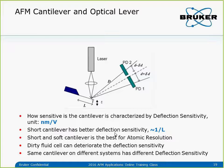A cantilever with high deflection sensitivity can measure smaller bending, meaning better force control. Another factor is the spring constant — a soft cantilever with smaller spring constant means better force control. So the best combination for atomic resolution imaging is a short cantilever with small spring constant — short and soft is best.